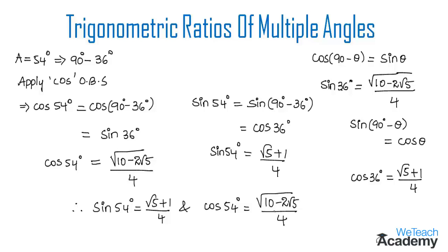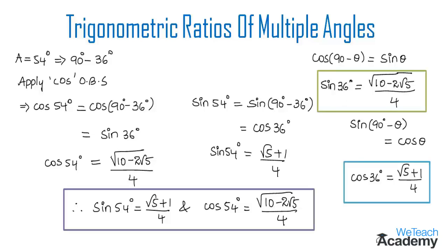Make a note of all these formulas: sine 36 degrees equals under root of (10 minus 2 root 5) divided by 4; cos 36 degrees equals (root 5 plus 1) divided by 4, which also equals sine 54 degrees; cos 54 degrees equals sine 36 degrees, which is under root of (10 minus 2 root 5) divided by 4. These formulas are useful to derive trigonometric ratios for other angles and to solve trigonometry examples.